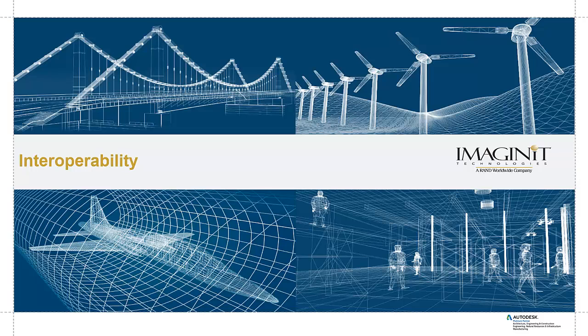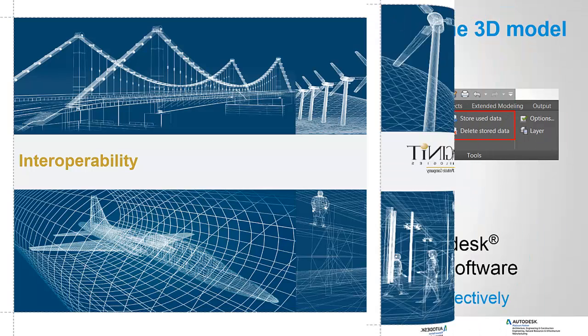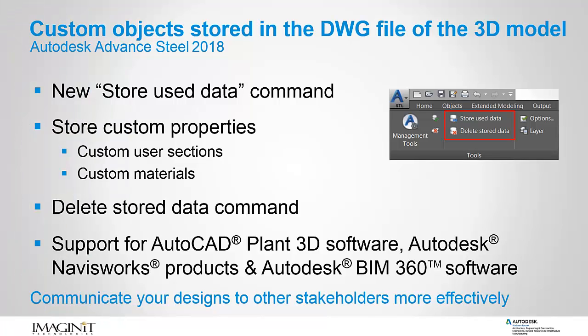Advanced Steel 2018 Interoperability. If your Advanced Steel model contains custom properties such as custom sections or custom materials, you can choose to write this information in the DWG file so that other project team members or stakeholders can visualize the entire model in other products such as Navisworks, AutoCAD Plant 3D, BIM 360, or A360 Viewer. If you change your mind about including custom properties in your Advanced Steel DWG file, you can use the Delete Store Data icon available in the user interface.